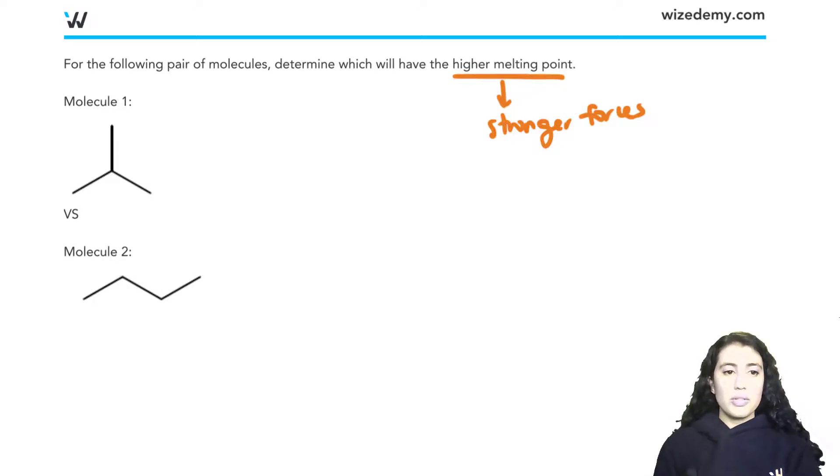So if we were to count the carbons, we see molecule 1 has 1, 2, 3, 4 carbons. And molecule 2 has 1, 2, 3, 4 carbons. So which of these do you think would have the higher melting point?